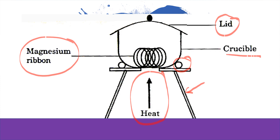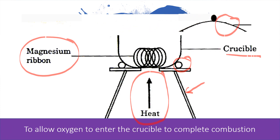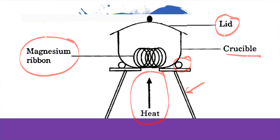When you first heat the magnesium ribbon, it is without the lid. Once the magnesium ribbon burns, you immediately cover the crucible to prevent the white fume from escaping. During heating, open the crucible once in a while to allow oxygen to enter and support combustion.